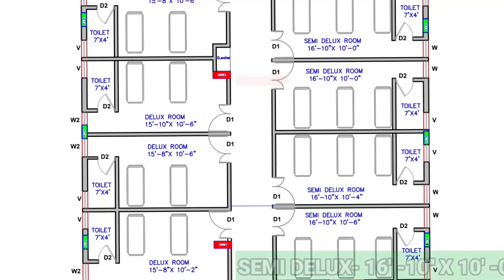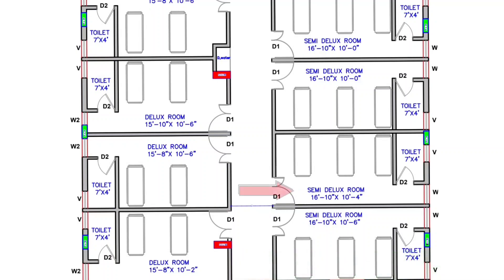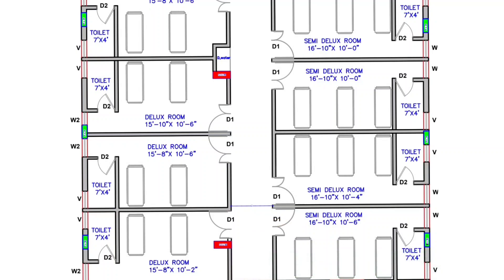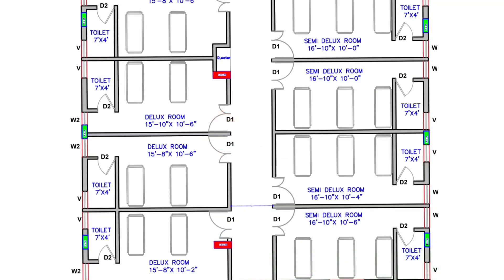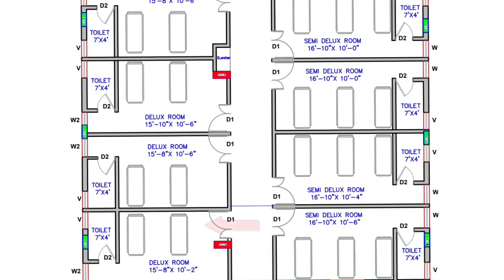There are additional semi-deluxe rooms sized 16 feet 10 inches by 10 feet 4 inches and 16 feet 10 inches by 10 feet 6 inches, each with a toilet provided. On the left-hand side, there are three deluxe rooms: the first sized 15 feet 10 inches by 10 feet 6 inches, the second 15 feet 8 inches by 10 feet 6 inches, and the third 15 feet 8 inches by 10 feet 2 inches. This is the total explanation of the second floor. Now let's move toward the third floor, which is our last floor.